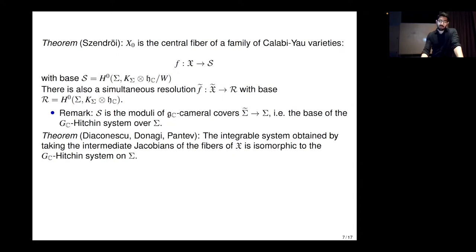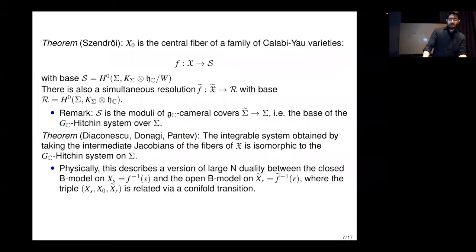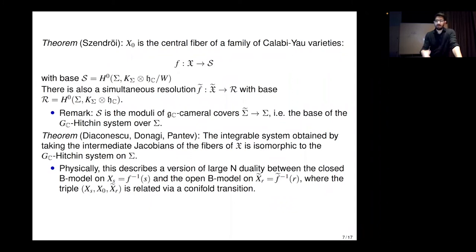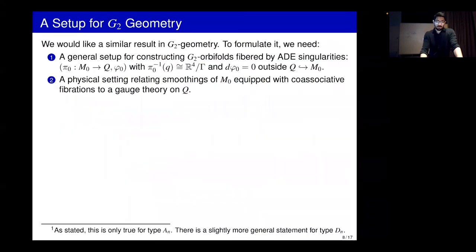This is a very nice result. The second part about intermediate Jacobians has absolutely no chance of carrying over to the G2 case, but we can get something close to the first part. There is a physical description of how they were led to this theorem: there is some version of large N duality between two different versions of the B-model, one on a smoothing and one on a resolution of the singular Calabi-Yau threefold. This physical setting was known before the result was proven.